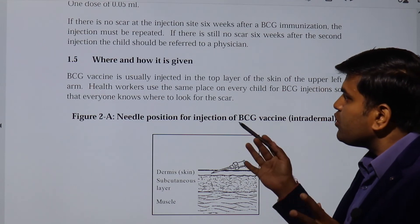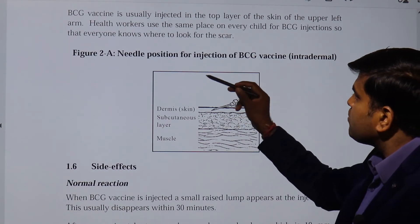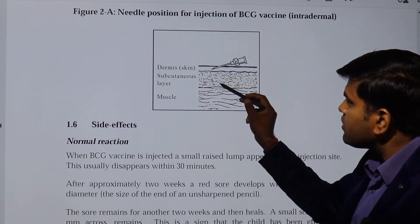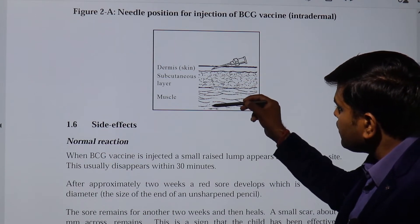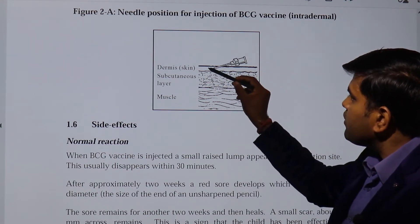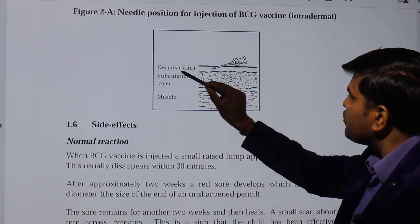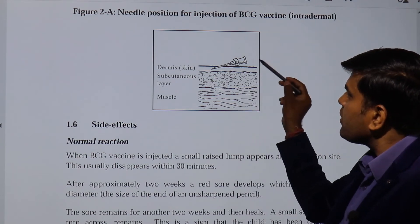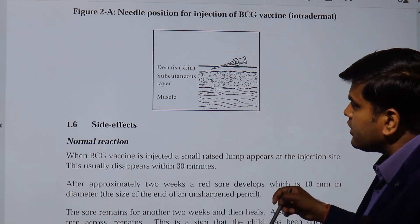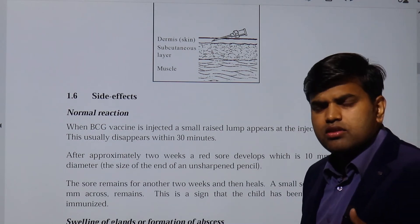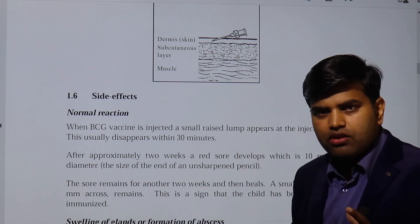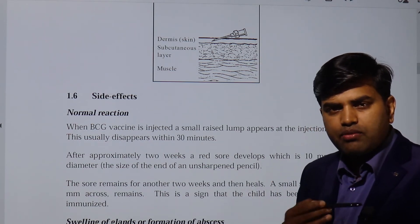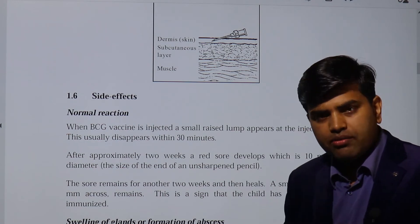BCG vaccine is injected into the top layer of skin — the dermis — of the upper left arm. The needle angle for intradermal injection is 15 degrees: 90 degrees for intramuscular, 45 degrees for subcutaneous, 25 degrees for intravenous, and 15 degrees for intradermal. Healthcare professionals, nurses, and vaccine administrators are trained in the correct injection site and technique to ensure successful immunization.